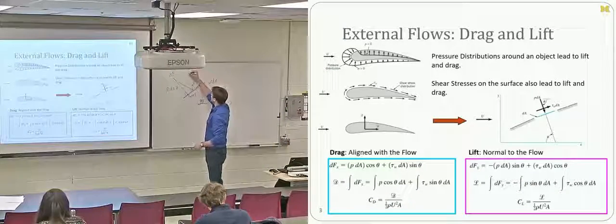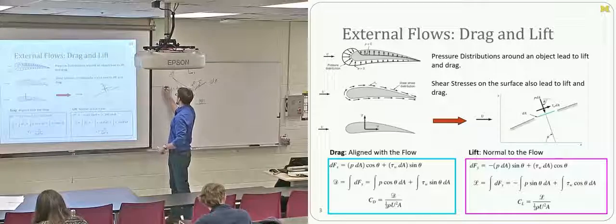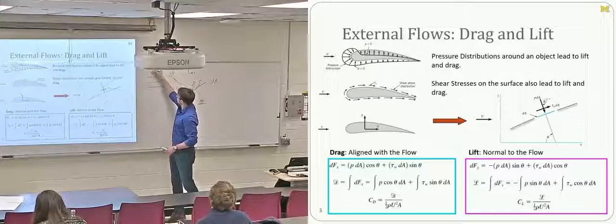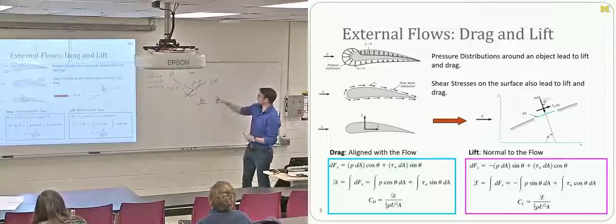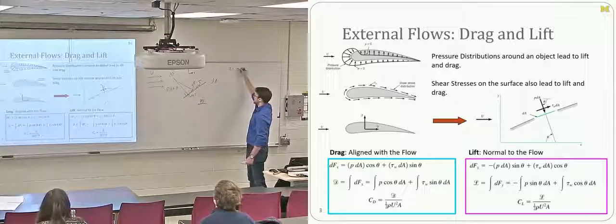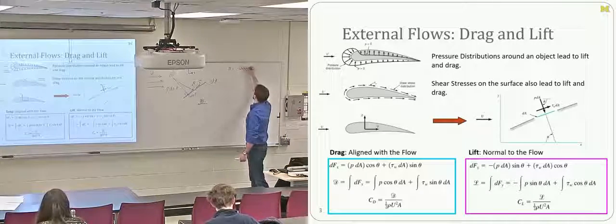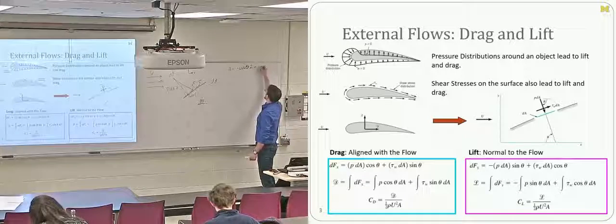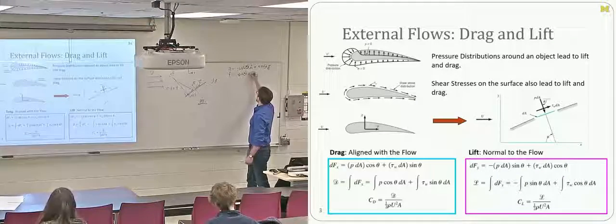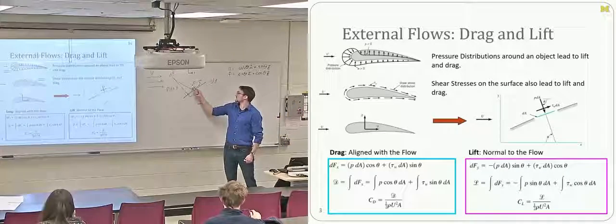If I establish my coordinate direction such that x is the direction the inflow is occurring, then the normal vector is equal to negative cosine(θ) î + sine(θ) ĵ, and the tangential vector is equal to sine(θ) î + cosine(θ) ĵ. These are the two vectors written in this coordinate frame.